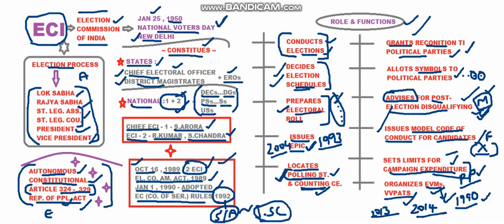VVPATs — Voter Verifiable Paper Audit Trails — were introduced around 2012–13 and fully deployed across the country by 2014. VVPATs verify EVMs to ensure transparency. A Supreme Court judgment in April 2019 mandated that VVPATs must verify 2% of EVMs, equivalent to 5 polling booths per constituency.